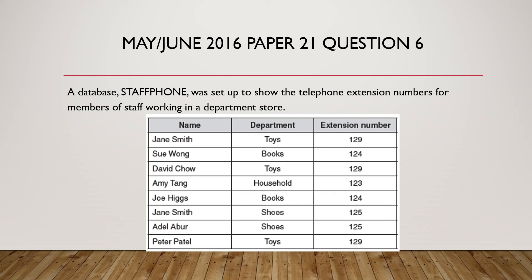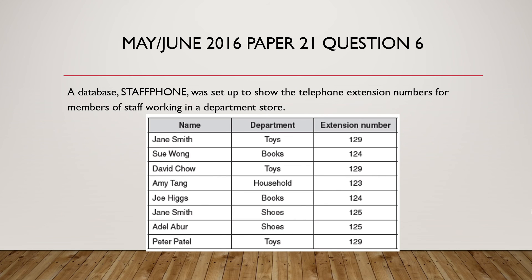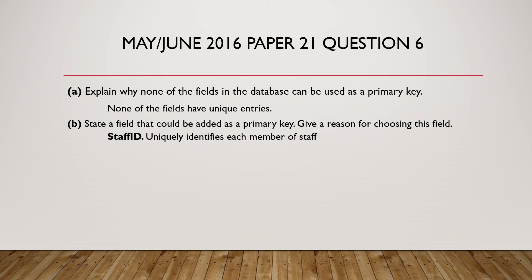Next question: May-June 2016, Paper 2-1, Question 6. A database called 'Staff Phone' was set up to show telephone extension numbers for members of staff in a department store. The first question: explain why none of the fields can be used as a primary key. Looking at the table, we can see non-unique values — Jane Smith is repeated, 'Toys' is repeated, and extension 129 is repeated. So none of the fields have unique entries. A field that could be used as a primary key would be Staff ID, because it uniquely identifies each member of staff.